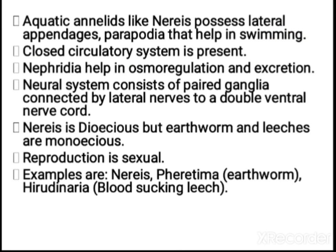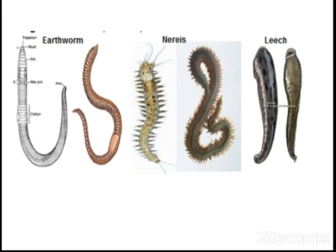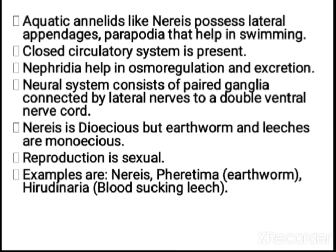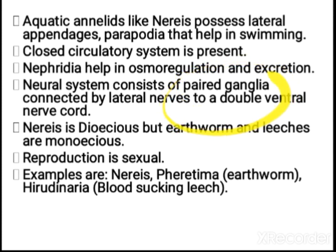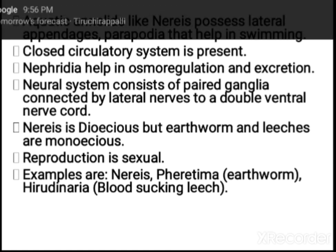Aquatic annelids like Nereis possess lateral appendages called parapodia, which are helpful in swimming. The circulatory system is closed, and the excretory organ is known as nephridia. Nephridia help in excretion and osmoregulation. The neural system consists of ganglia — groups of nerve cells — and a nerve cord. The ventral double nerve cord is present.